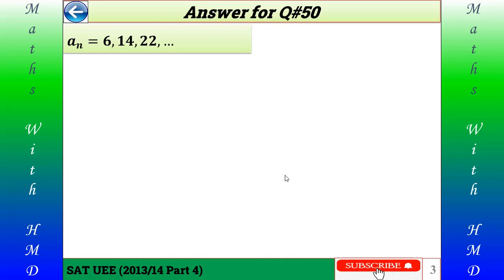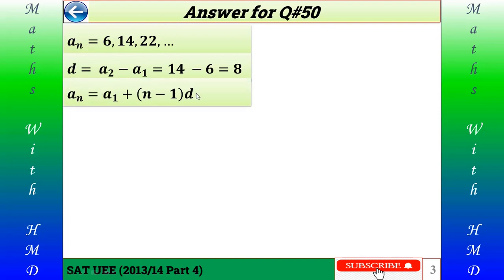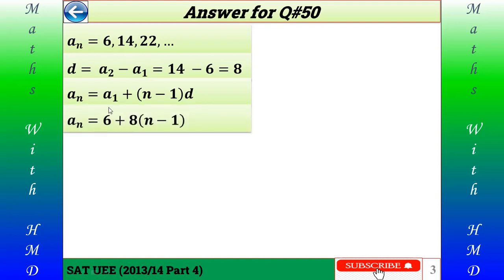Here is the answer for question number 50. It is given that the sequence is 6, 14, 22. The common difference d is a₂ minus a₁. Since it is an arithmetic sequence, the common difference becomes 14 minus 6, which equals 8. The general term of an arithmetic sequence can be written as aₙ equals a₁ plus (n minus 1) times the common difference d.